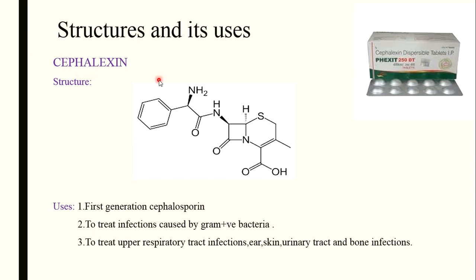The first structure we are going to see is cephalexin, which is a first generation cephalosporin. This is the structure of cephalexin — it contains the cepham group. As you know, in the general structure of cephalosporins: at the first, second, third, and fourth positions, at the third position there is a methyl group, and at the fourth position there is a COOH group. The beta-lactam ring fused with a thiazine ring is called the cepham group — that's why the name cephalosporins.